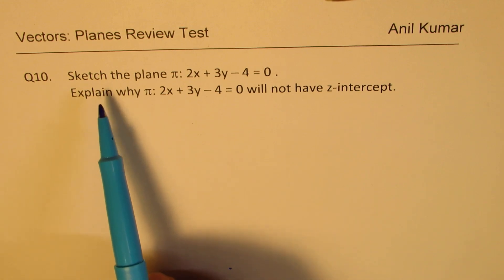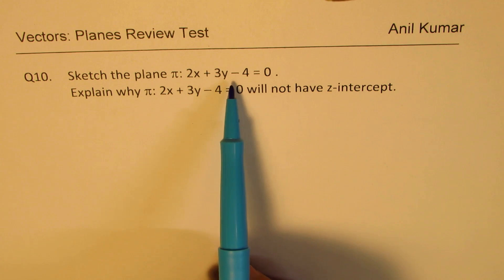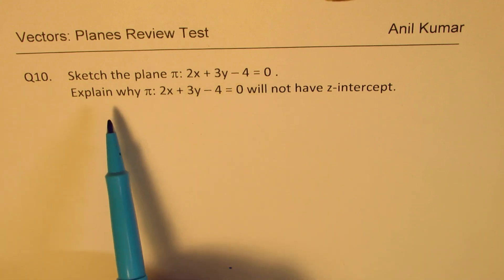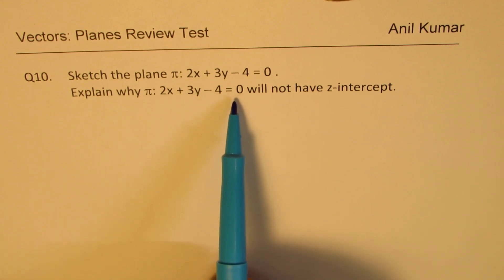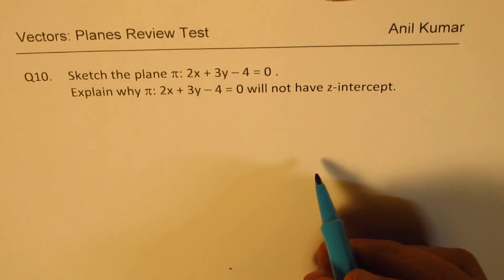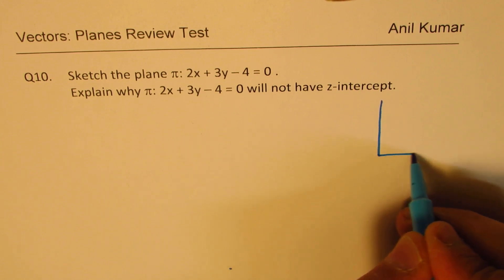So the question here is, sketch the plane π: 2x + 3y - 4 = 0. Explain why the plane π: 2x + 3y - 4 = 0 will not have z-intercept. So let's try to sketch it first. That's our coordinate in R3.